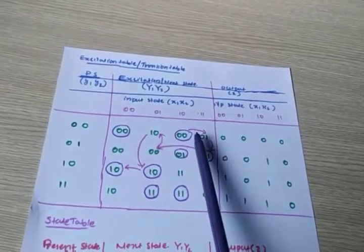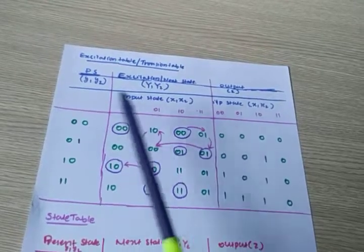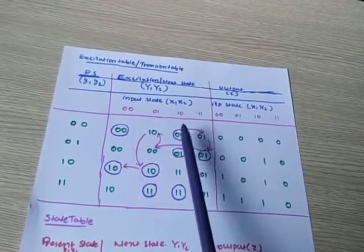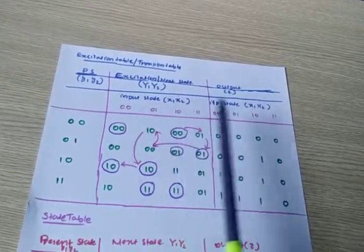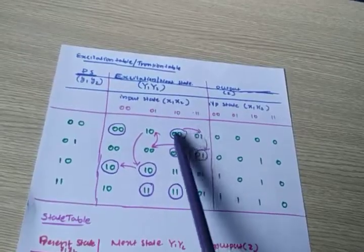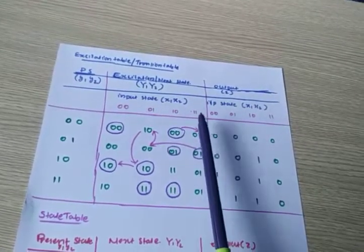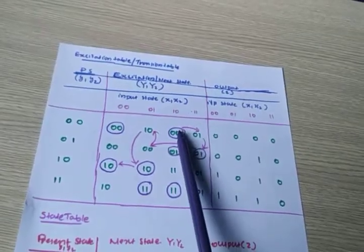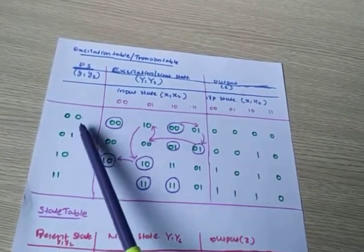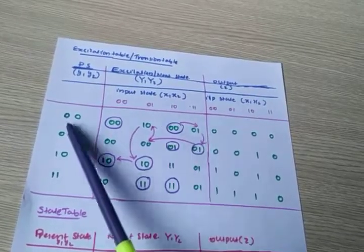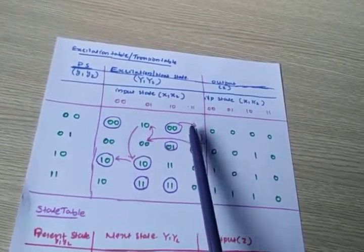Then this should be equal. Why? Because y1 and y2 are changed. After a delay, this should be equal. In the diagram, you can see the small y1 and capital Y1 are separated by a delay element only. That means after a delay, capital Y1 should be equal to small y1 — the next state should equal the present state. But when I am changing the input, the set is not changed, and the next state becomes 0,1. These two are not equal, so it is unstable.